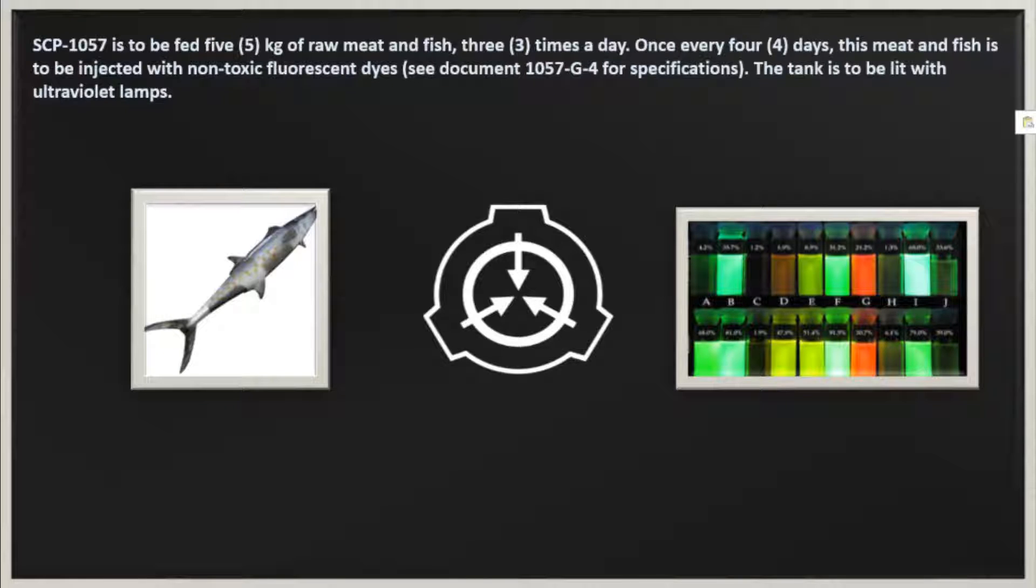SCP-1057 is to be fed 5 kg of raw meat and fish 3 times a day. Once every 4 days, this meat and fish is to be injected with non-toxic fluorescent dyes. See Document 1057-G4 for specifications. The tank is to be lit with ultraviolet lamps.